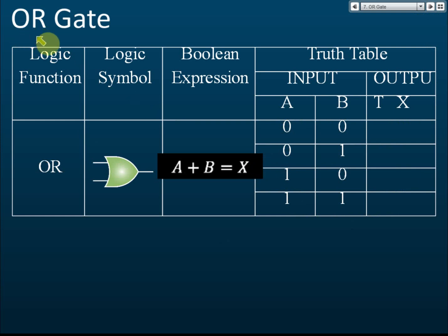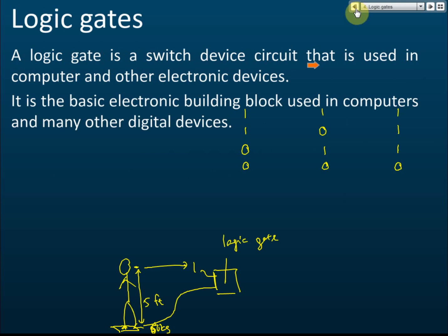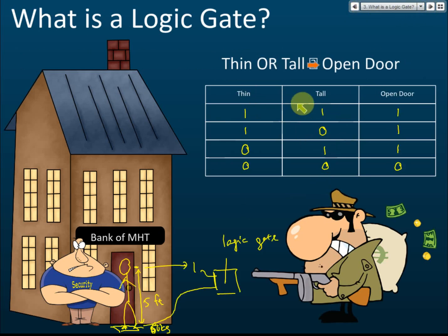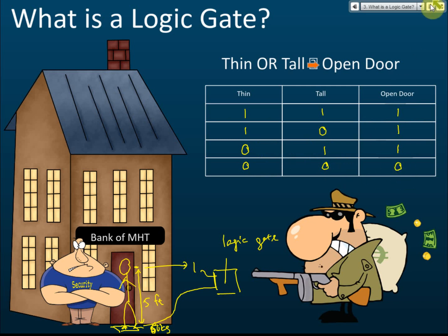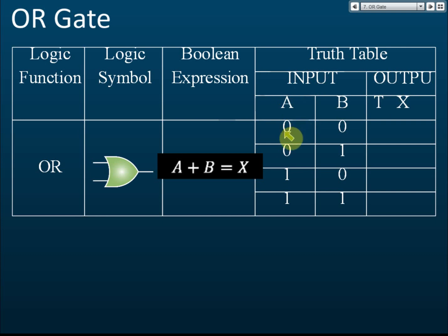The OR gate is exactly the same as the second case — when both inputs are positive, or at least one of them is positive, the result is positive. Only when both inputs are negative is the result negative. For the OR gate truth table: A=0, B=0 gives 0; if one input is 1, you get 1; and if both inputs are 1, you also get 1.